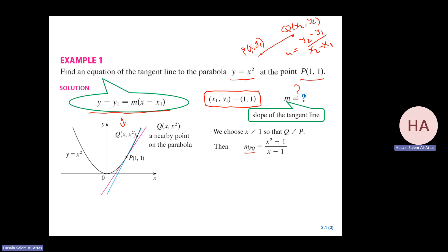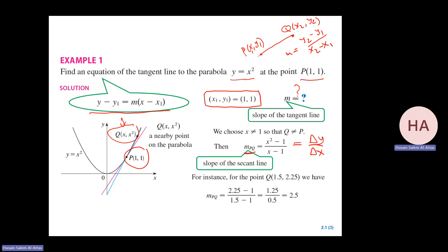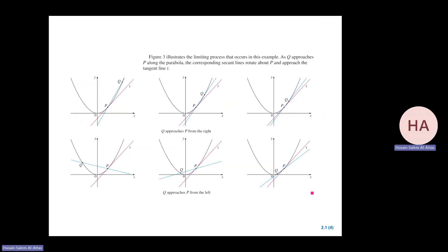This will be the slope of line PQ, which is delta Y over delta X. Since Q is (x, x²) and P is (1,1), you have (x² - 1)/(x - 1). If we take the point, for example, 1.5, then this is the slope of line PQ. If I make Q go near P, then the slope of the blue line is almost the same as the slope of the red tangent line.